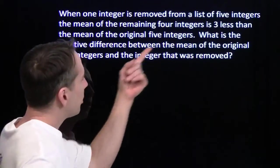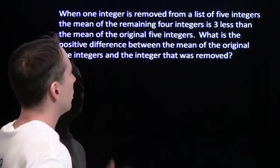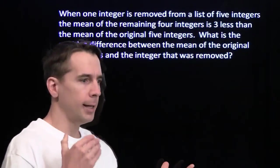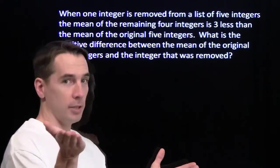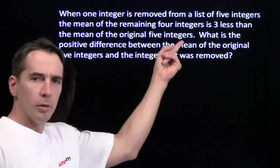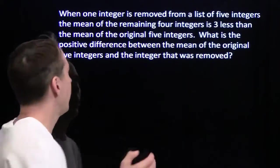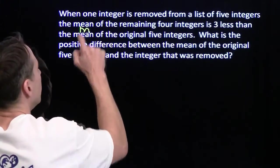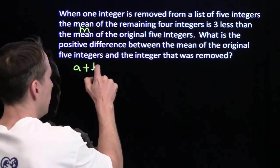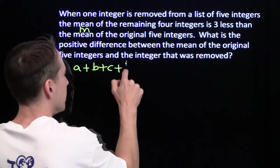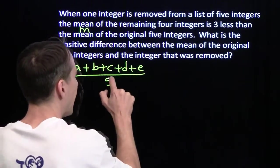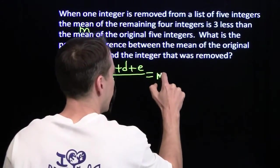Okay, integers removed from a list of five integers, mean of, we'll start with the five integers. We'll call them A, B, C, D, and E. And we have a mean of these five integers, we'll call that M, M for mean. So you've got five integers A, B, C, D, E, their mean is M. That means if I add them all up, divide by five, I get M.